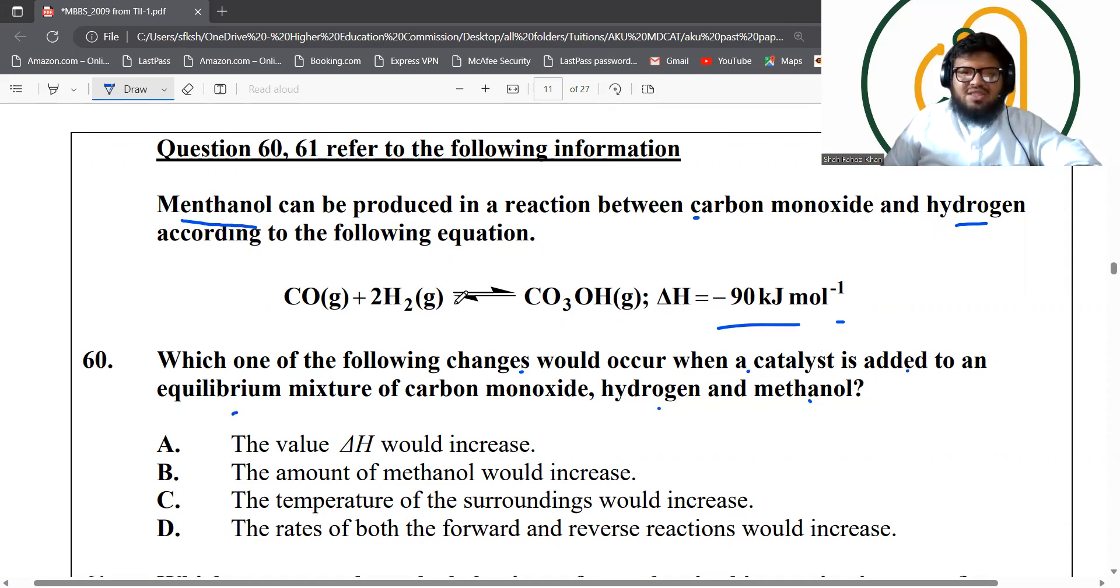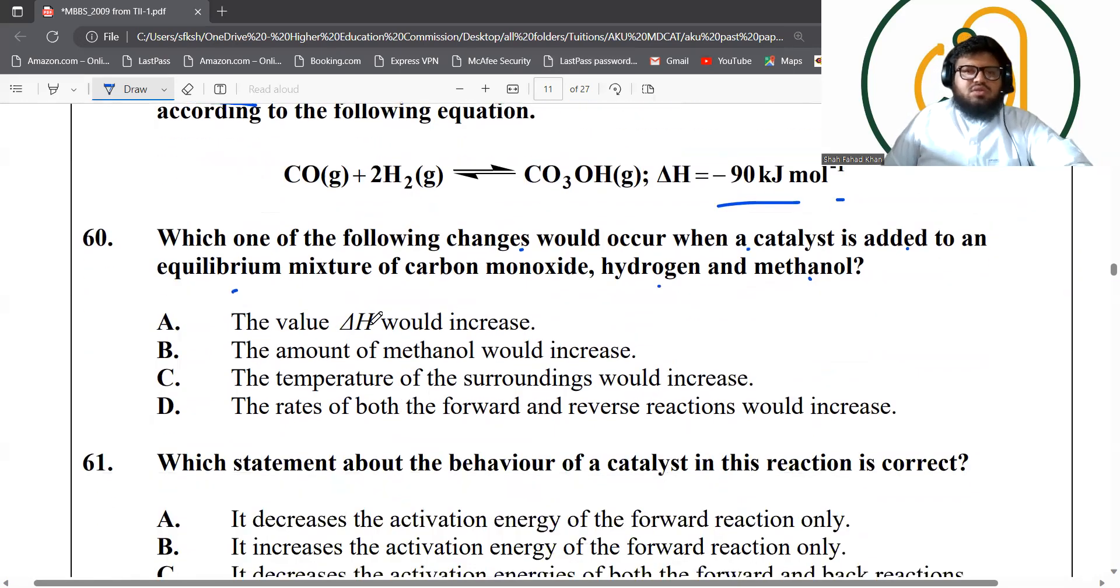Catalyst never changes the position of the equilibrium. It only increases the rate of both forward as well as backward reactions. It favors both the reactions equally, but never shifts the position of the equilibrium. So the delta H value is unaffected by the catalyst. Amount doesn't increase because both forward and backward are equally affected.